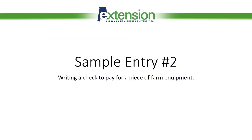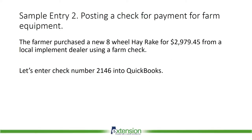Now let's move on to our second entry: writing a check to pay for a piece of farm equipment. This is a real simple entry that we do lots of times. In this example, the farmer purchased a new eight-wheel hay rake for $2,979.45 from a local implement dealer using a farm check. So let's enter check number 2146 into QuickBooks.